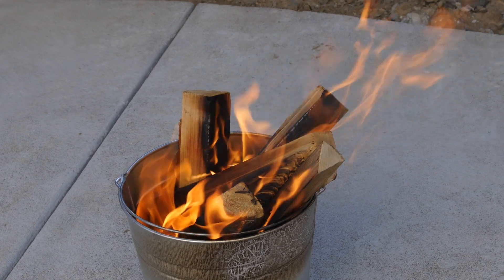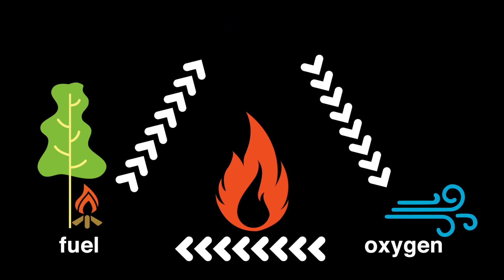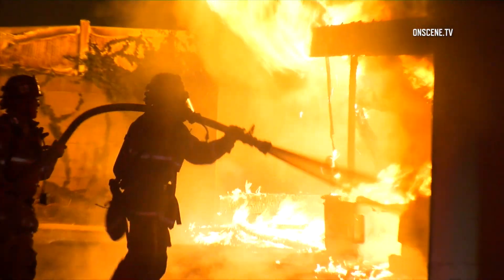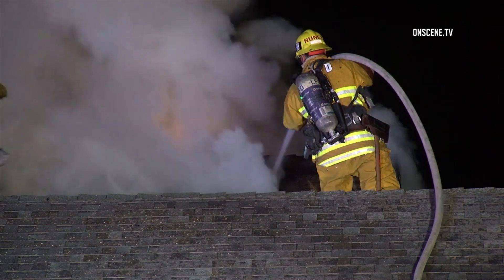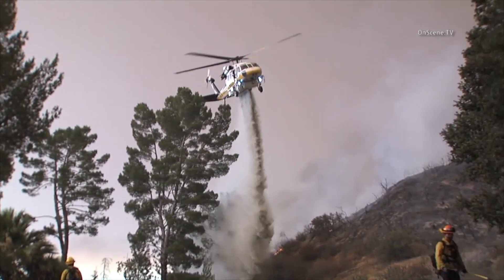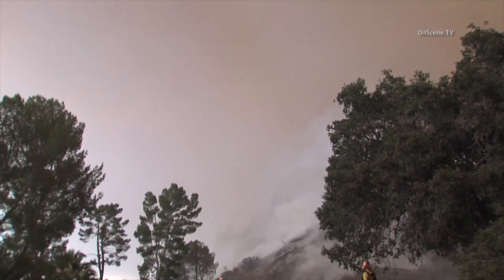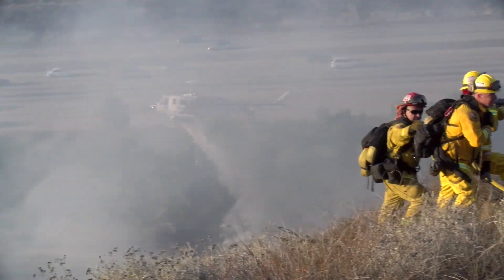Now, how do we put a fire out? That's simple — by removing one of the three elements in the fire triangle. Let's start by removing heat. In a house fire, firefighters remove the heat by spraying water on the fire. With enough water, the heat will be removed and the fire will go out. The same is true in wildfires, when helicopter pilots drop hundreds of gallons of water on burning hillsides.